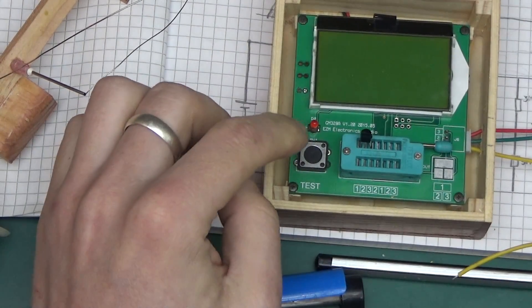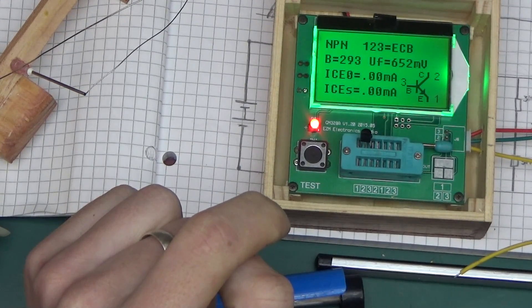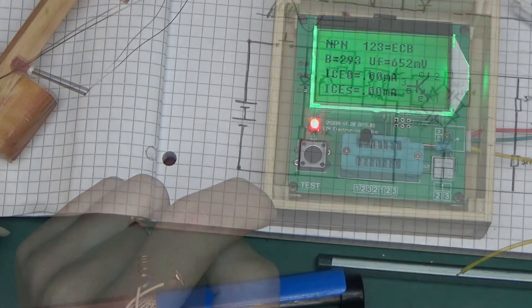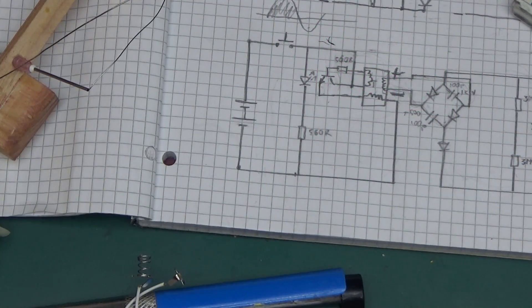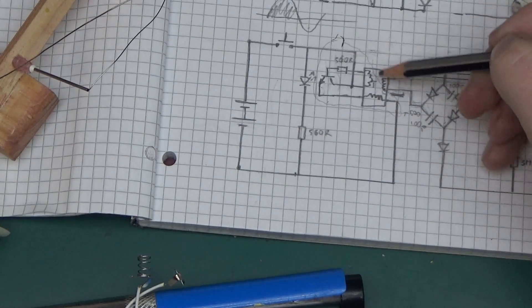Here it is in the component tester. This should be emitter, base, collector. Let's see: emitter, collector, base. And that makes sense. Now we have a Joule Thief.